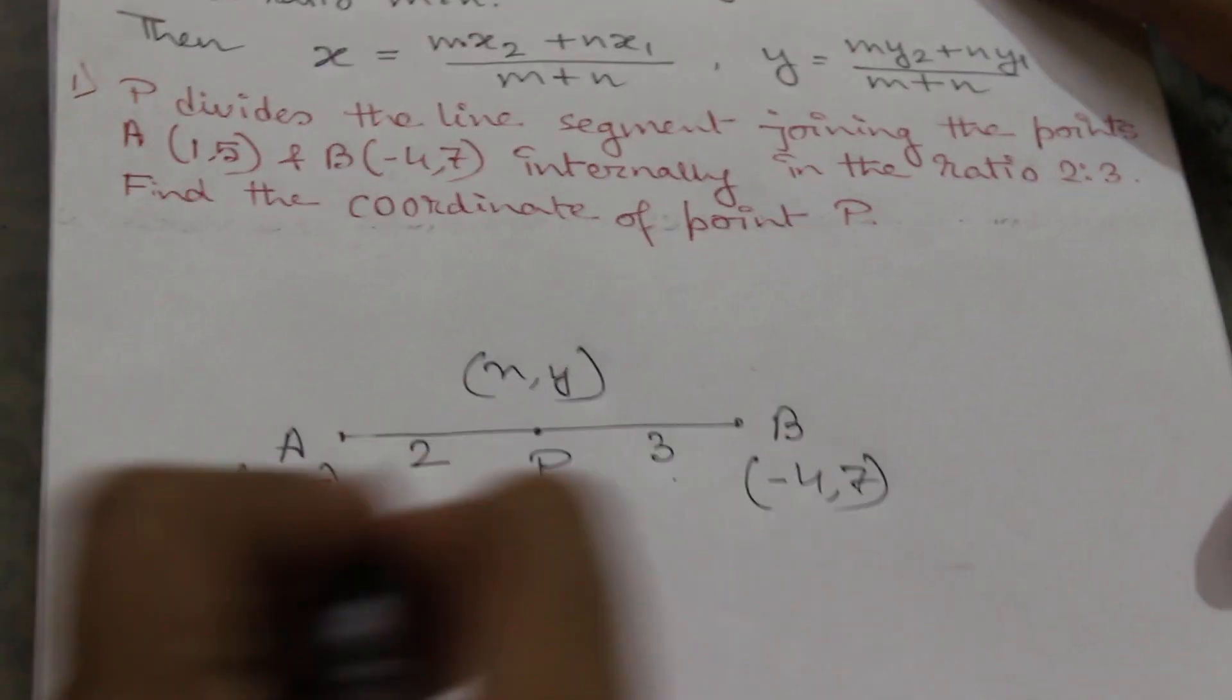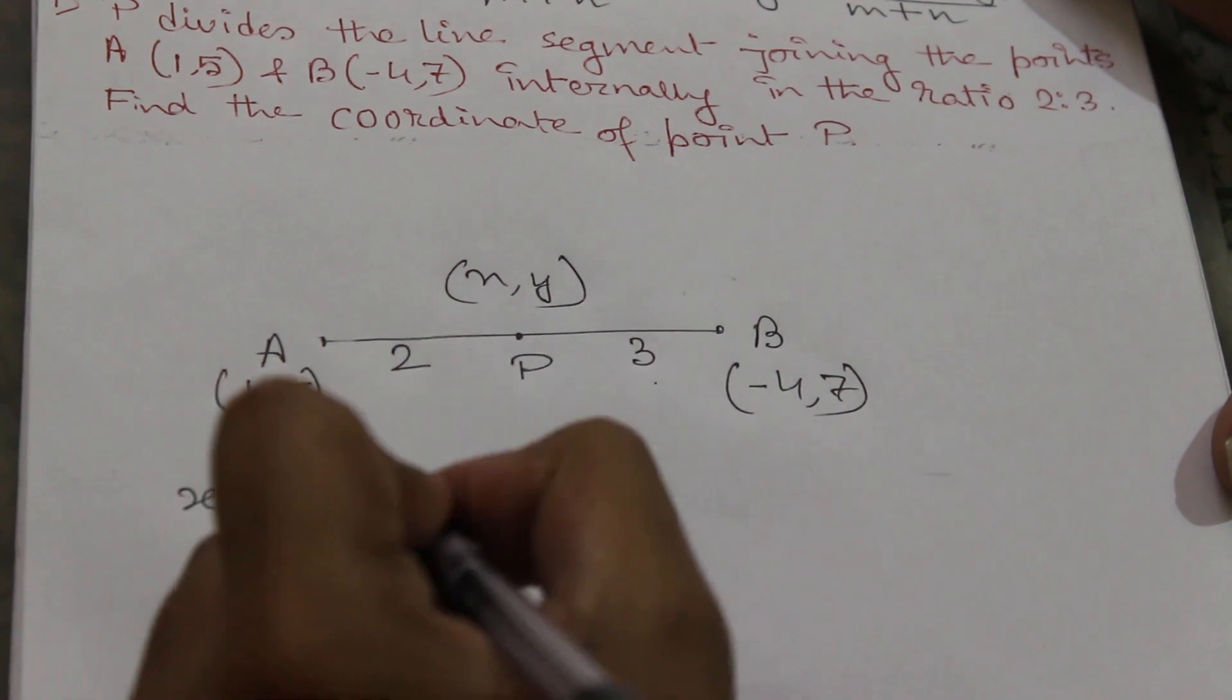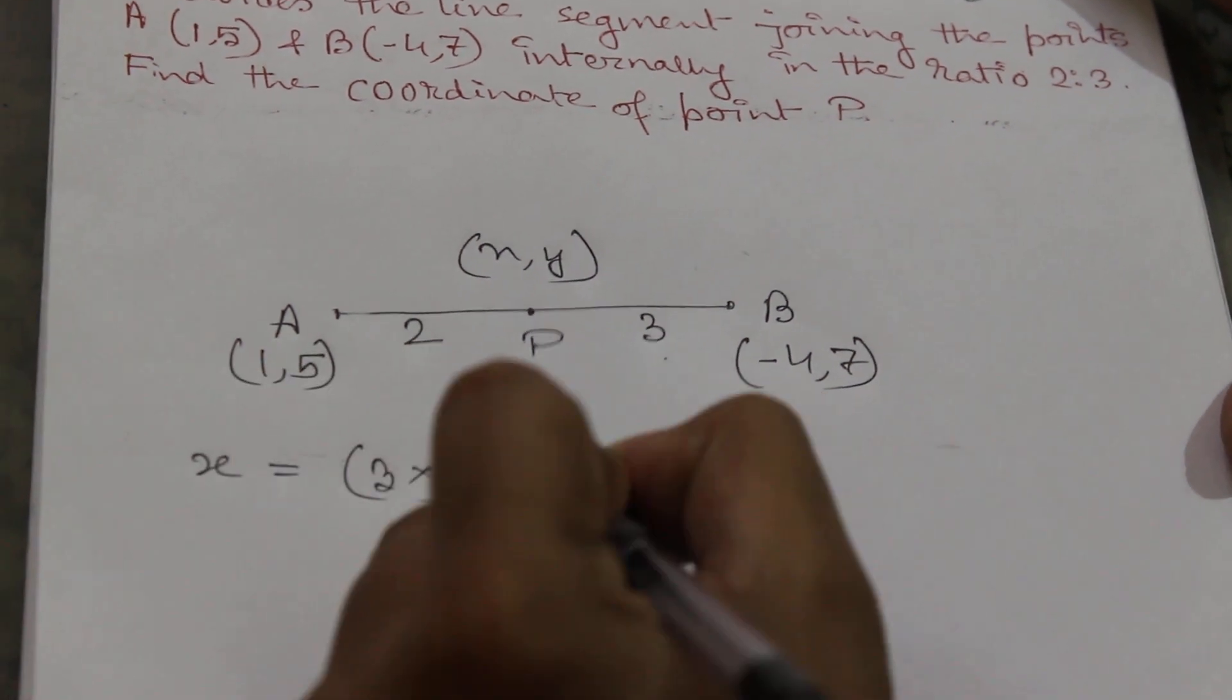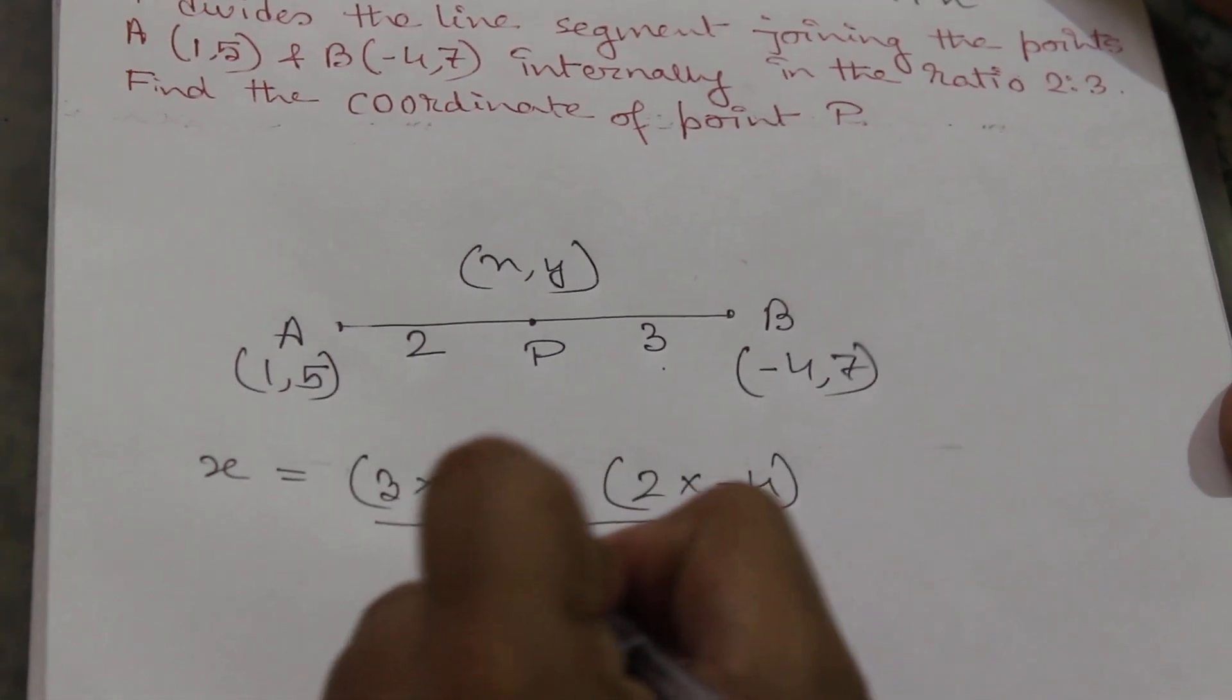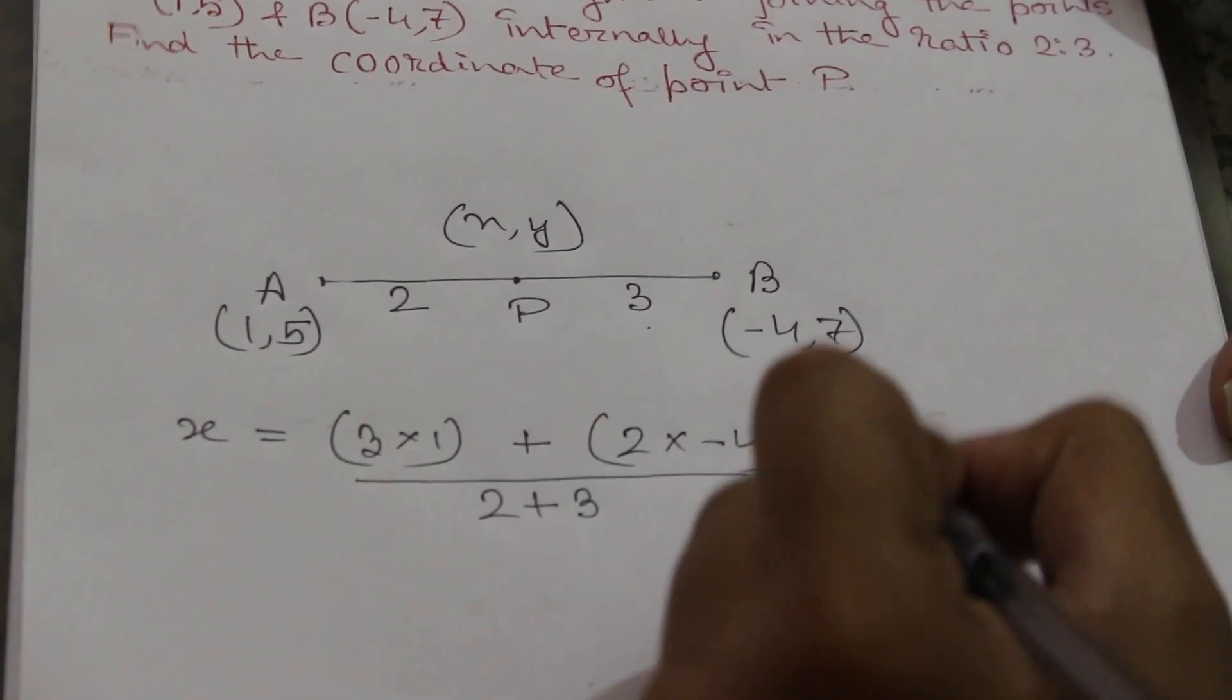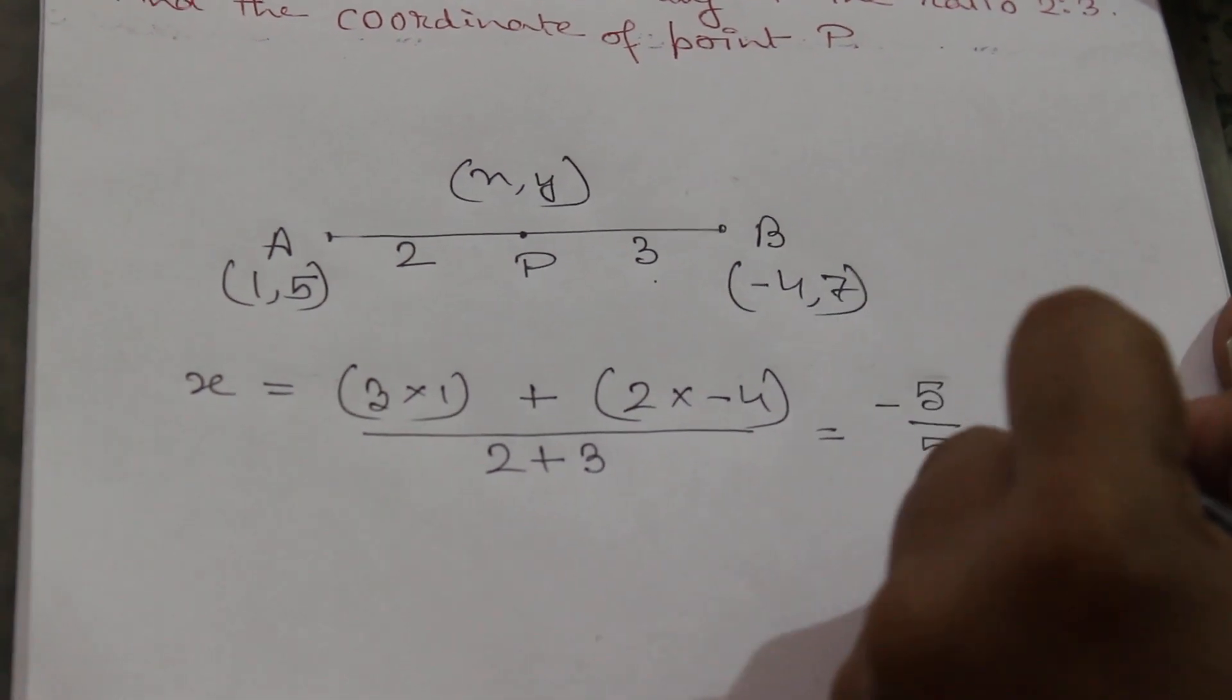So as per the equation, x equals 2 into 1 plus 3 into (-4) by m plus n, that is 2 plus 3. So it will be equal to -5 by 5, that is -1.